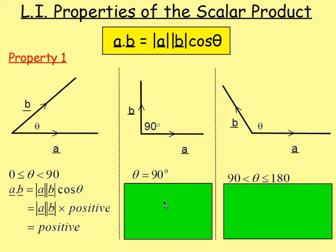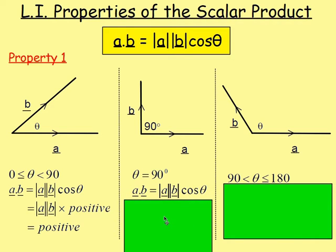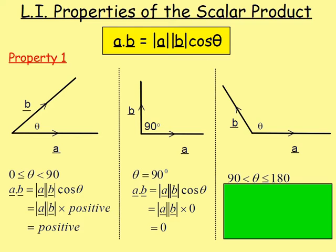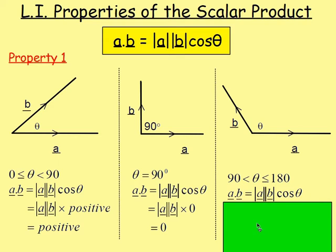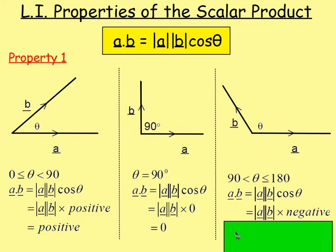If the angle is 90 degrees, A dot B equals the magnitude of A times the magnitude of B times cos theta. The cosine of 90 is zero, so the result is just zero. If theta is between 90 and 180 degrees, you again have magnitude of A times magnitude of B times cos theta, but in that second quadrant cos is a negative number, so your scalar product A dot B will be negative.